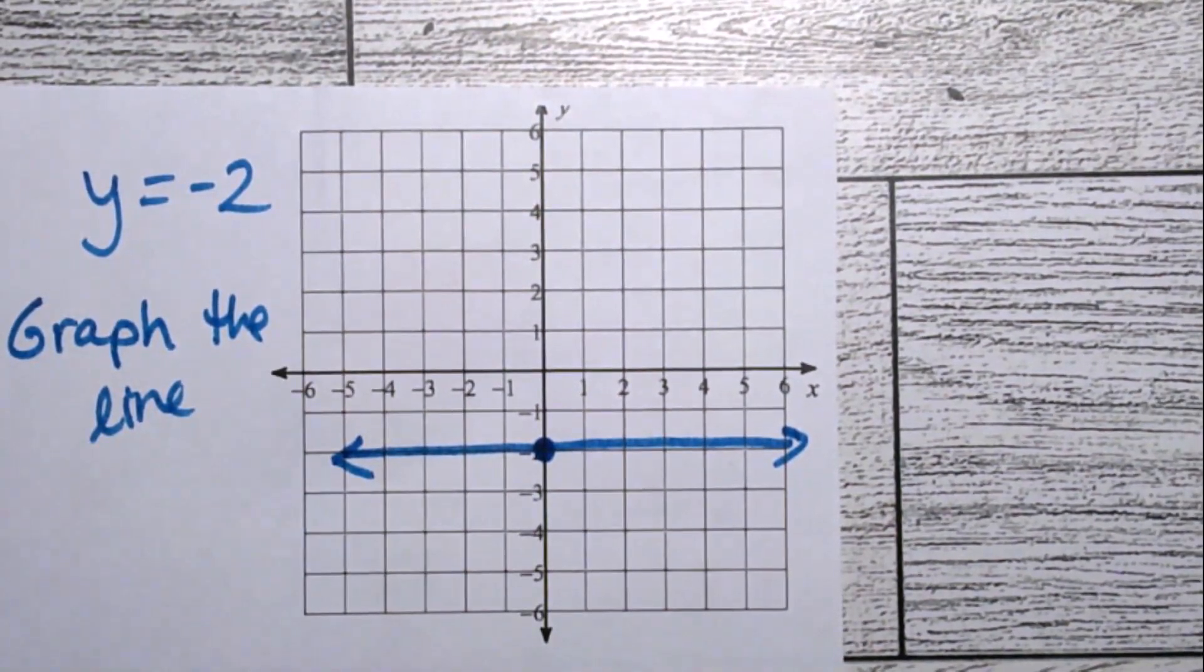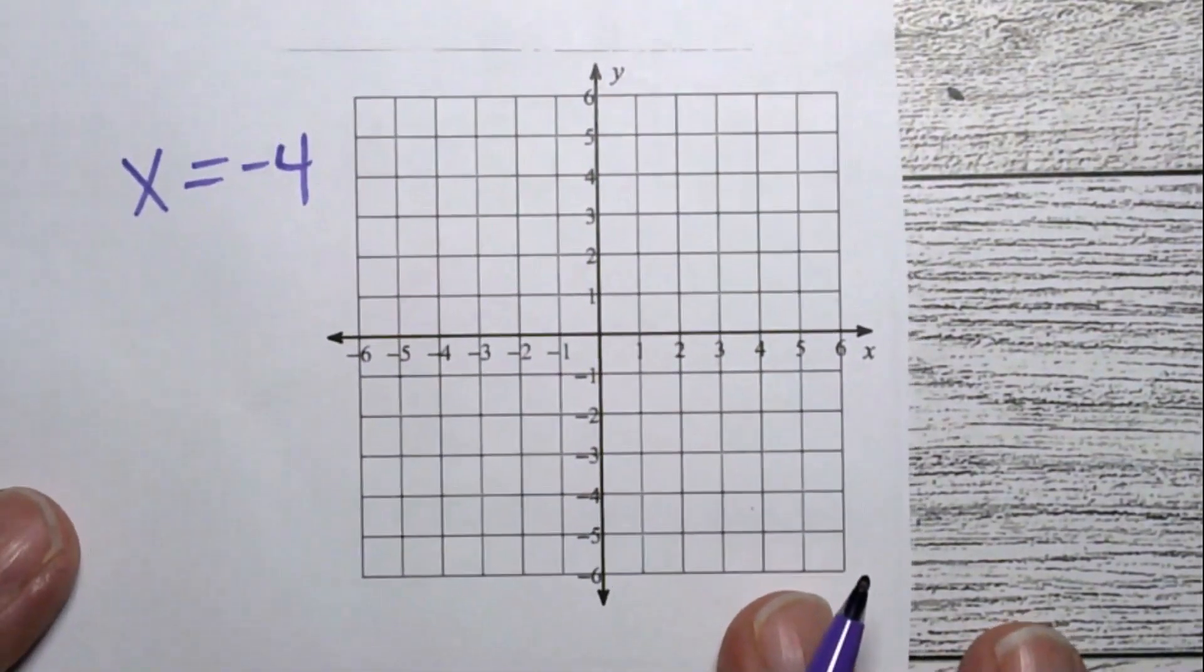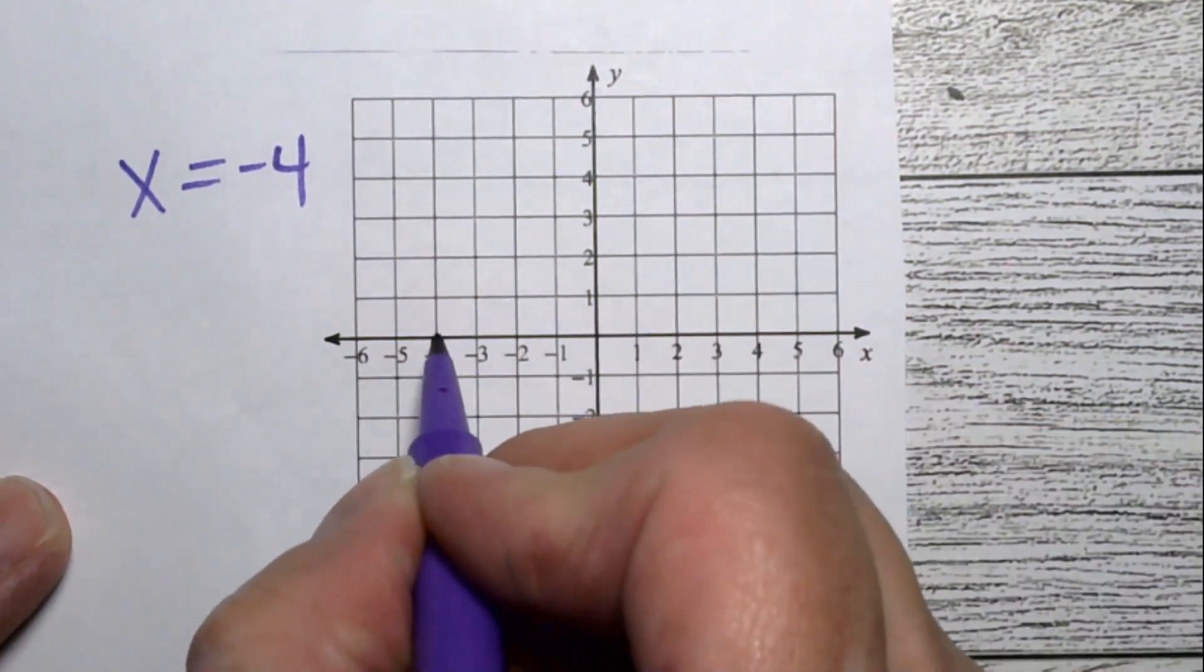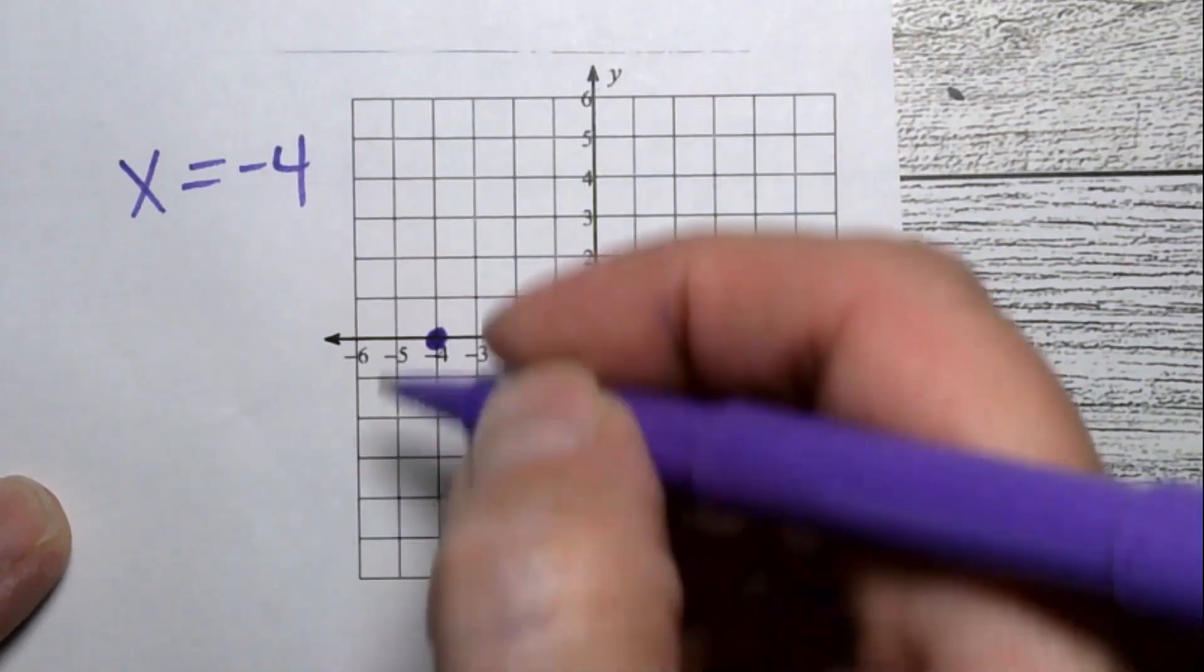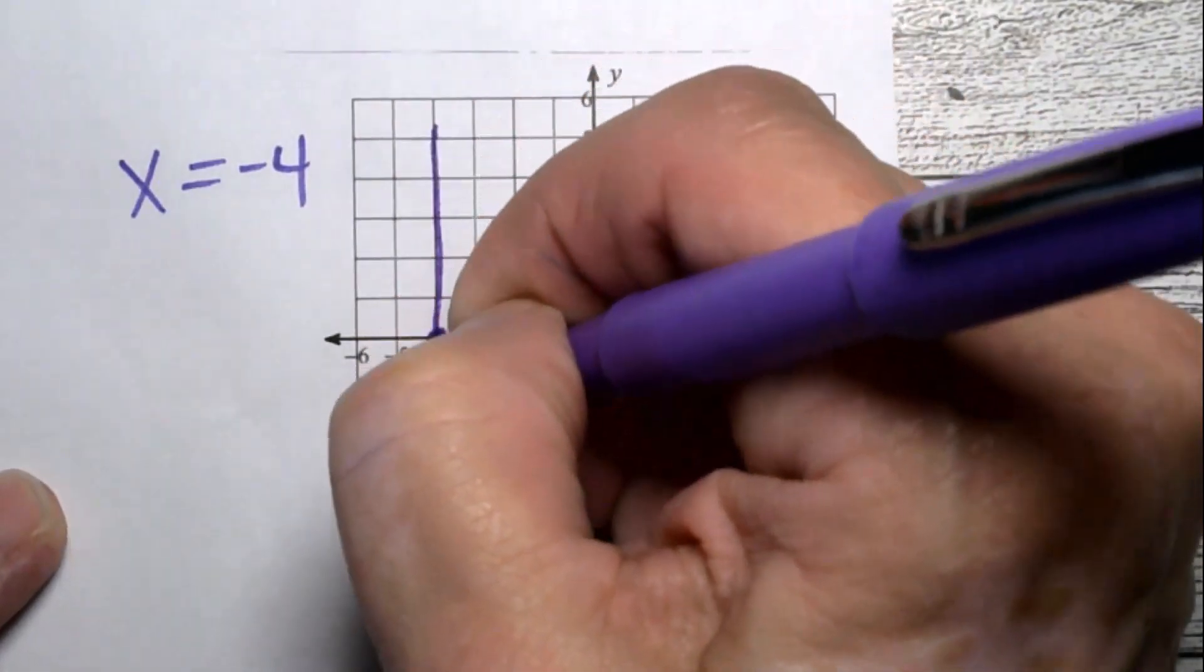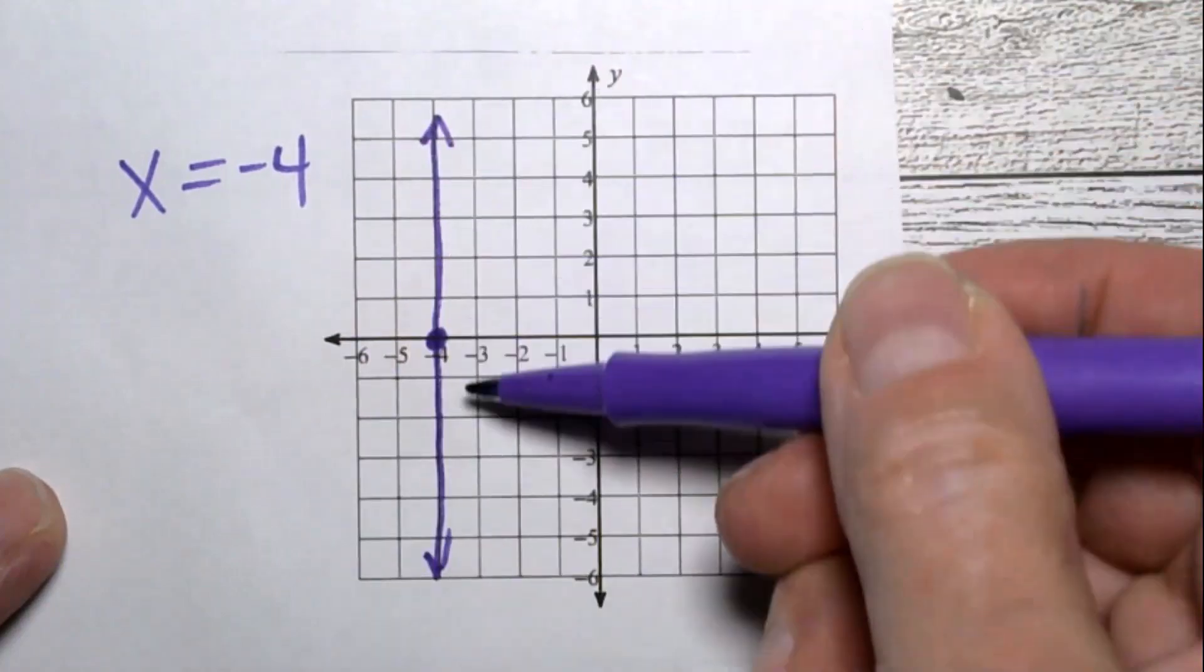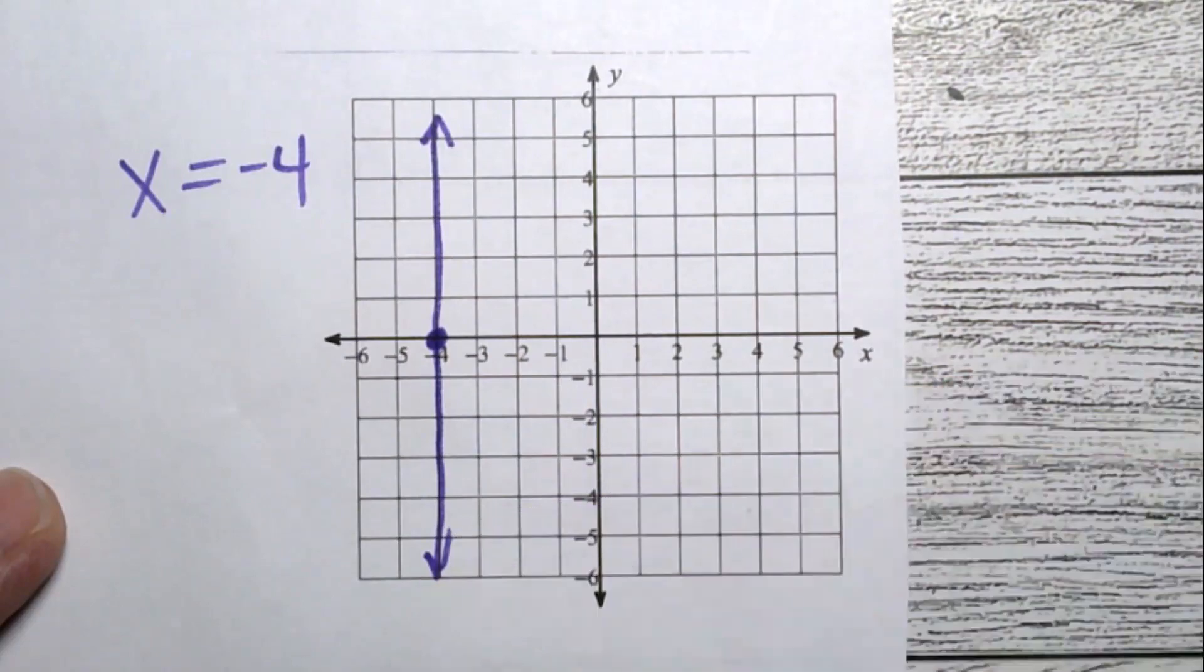If we're going to graph the line x equals negative 4. Well, x equals negative 4. That's the intercept right there. But the line is going to go through all the values of y where the x is held constant at negative 4. So that's going to be a vertical line.